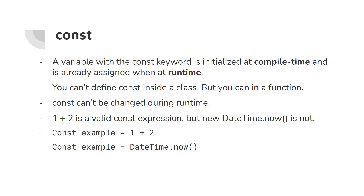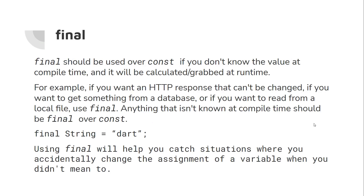If the value is not known at compile time, you will get an error if you use the const keyword. For example, 1 plus 2 can be assigned to a constant variable, but DateTime.now() cannot be assigned to a constant variable because the value is not known when the code is compiled — it is only known at runtime.